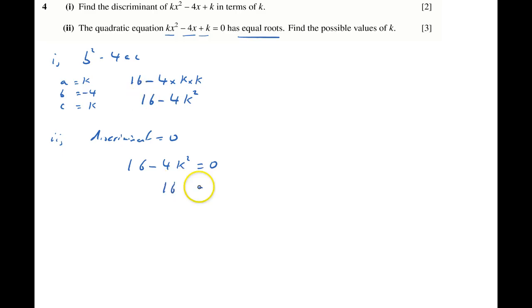So 16 equals 4k squared, divide both sides by 4. That gives you k squared equals 4. So k equals plus or minus 2.